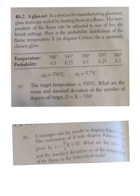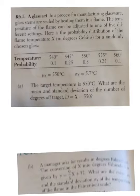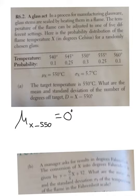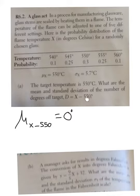Letter A: the target temperature is 550 degrees, which is exactly our average — that's actually pretty good. What are the mean and standard deviation of the number of degrees off target? Our average minus our target is 550 minus 550, which is 0. So our new average is 0 degrees off target. As for the standard deviation, we're only subtracting a constant, so the standard deviation stays the same at 5.7 degrees.